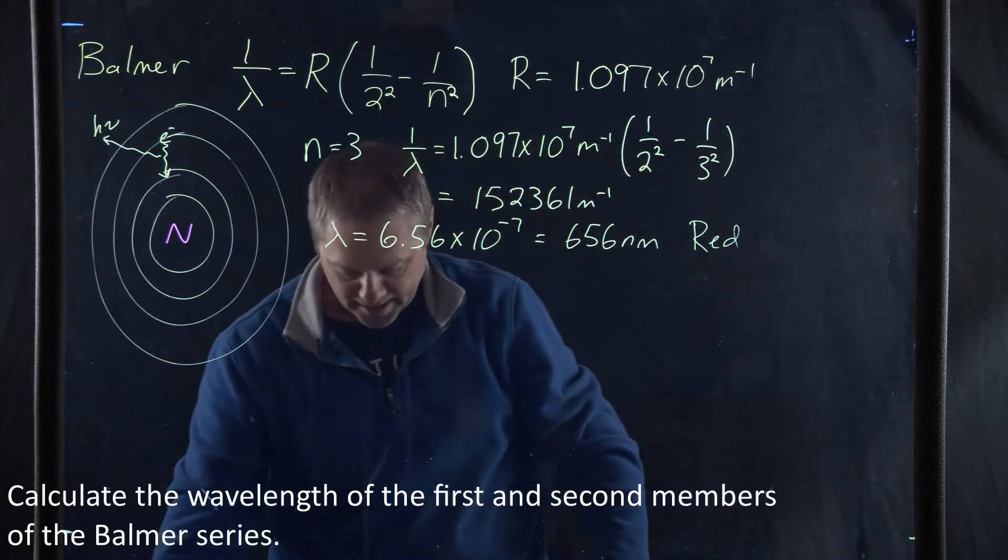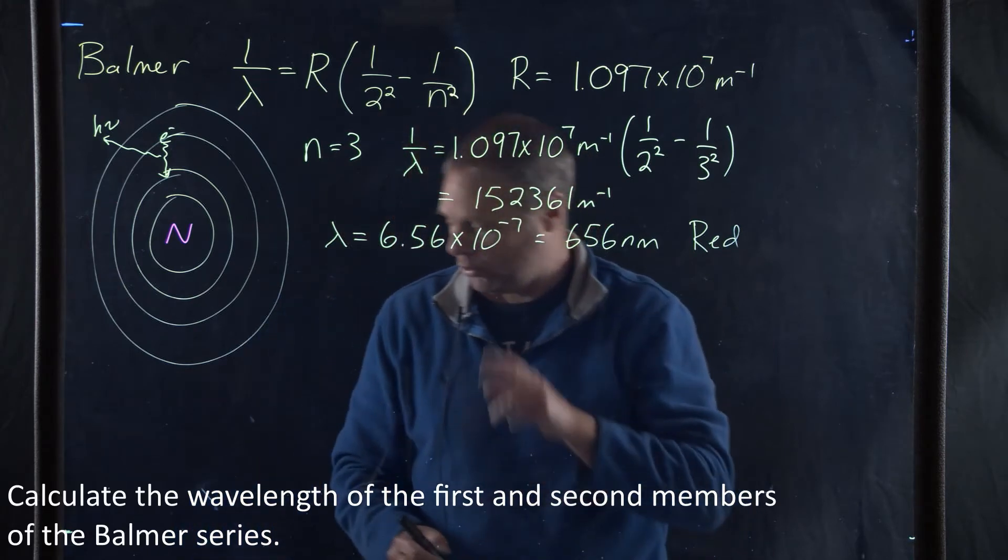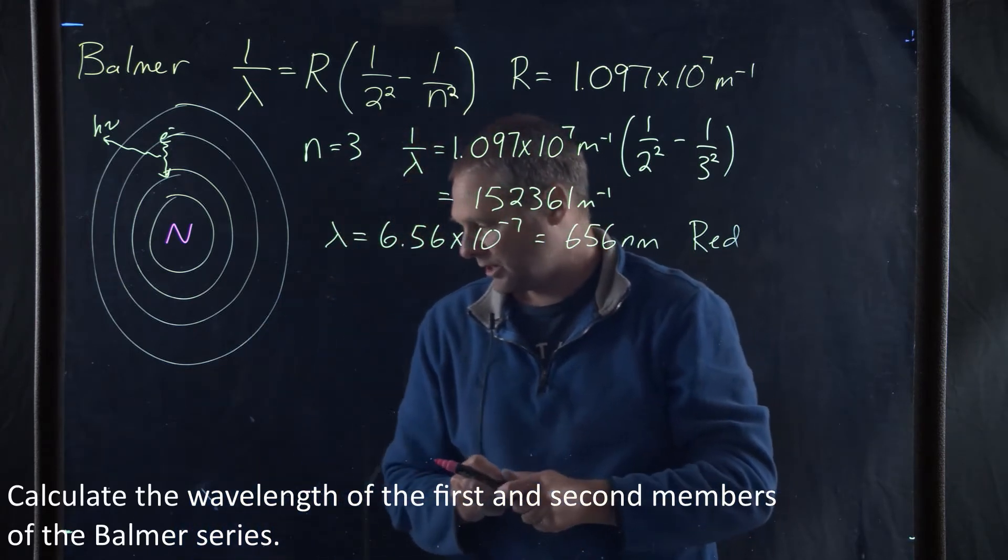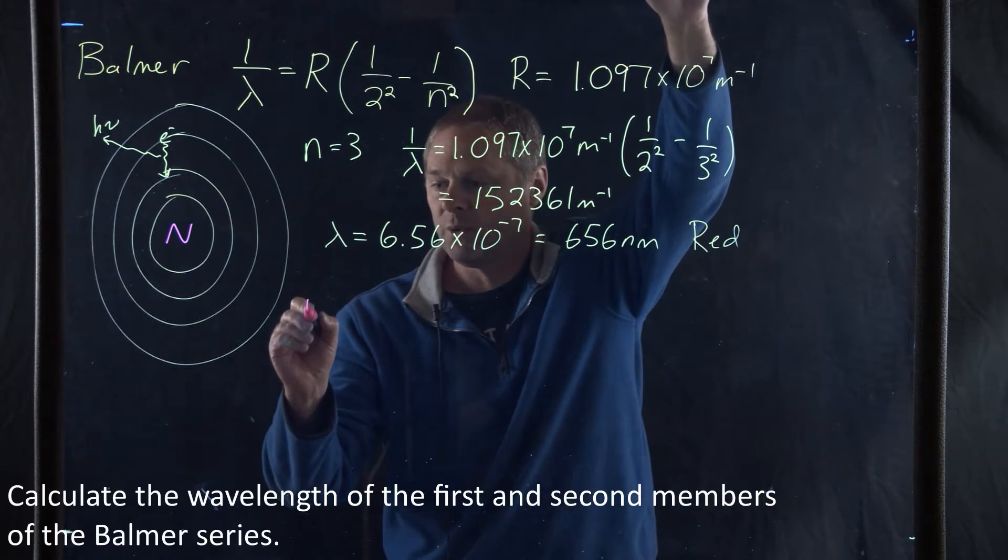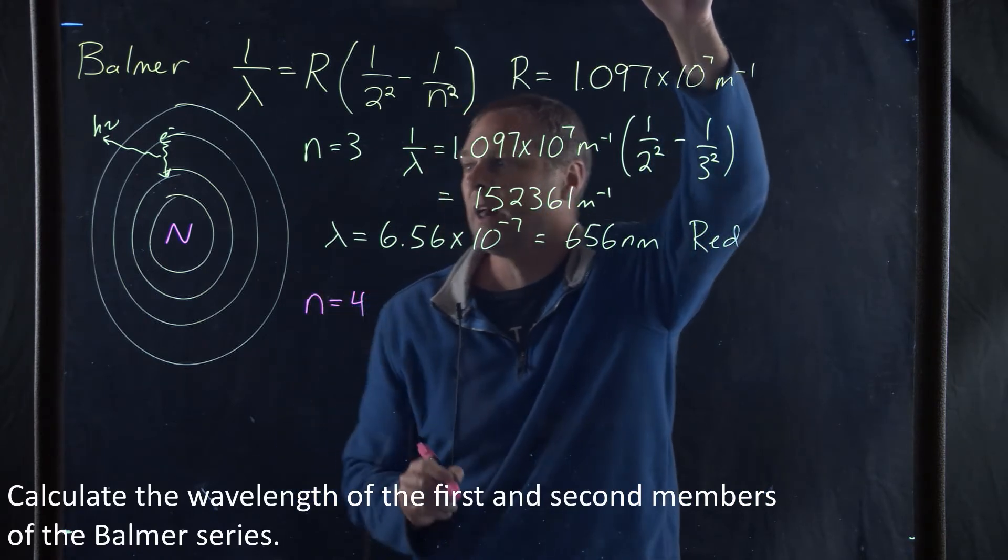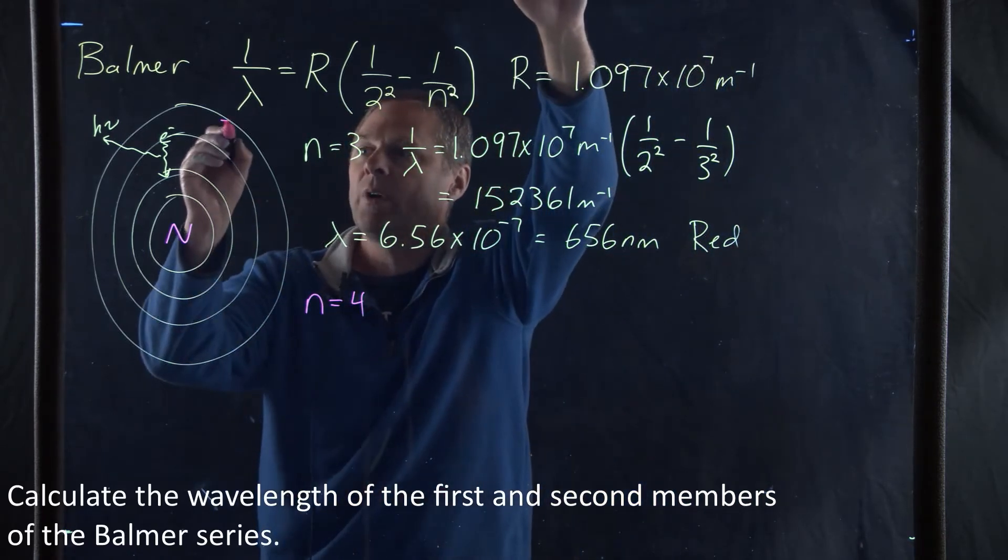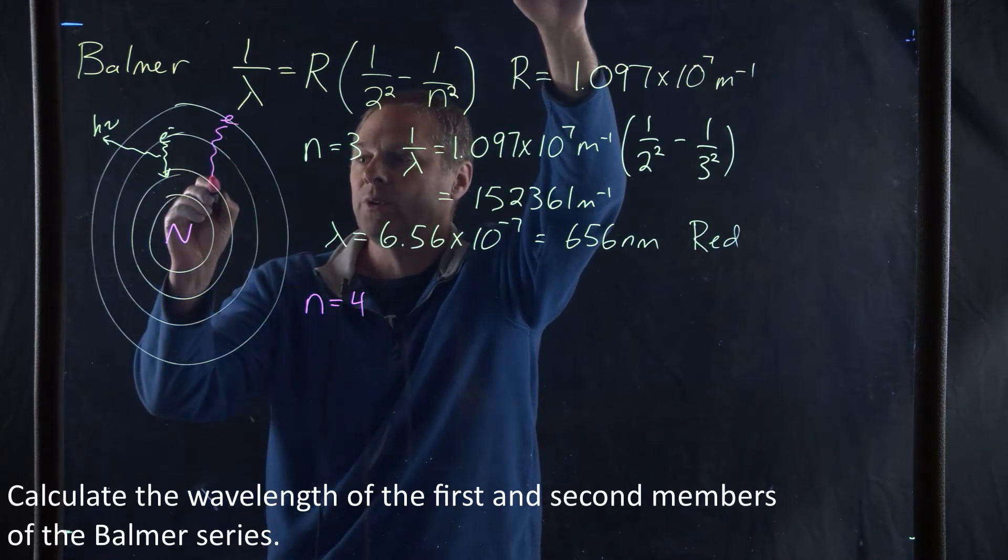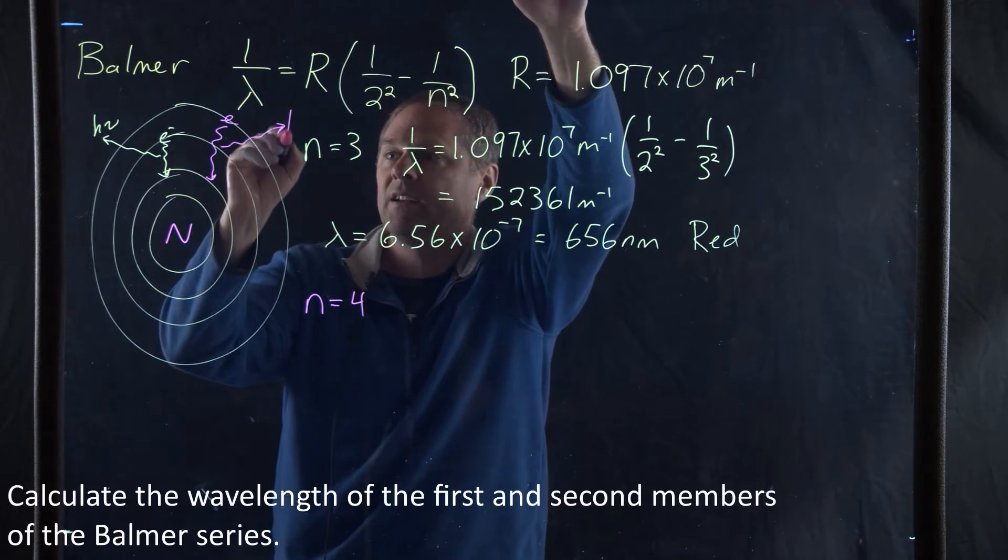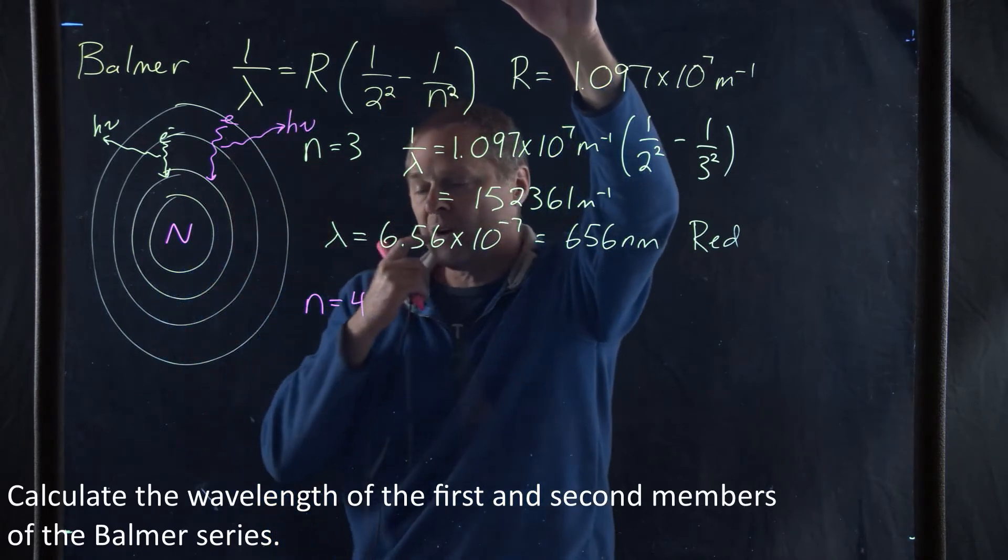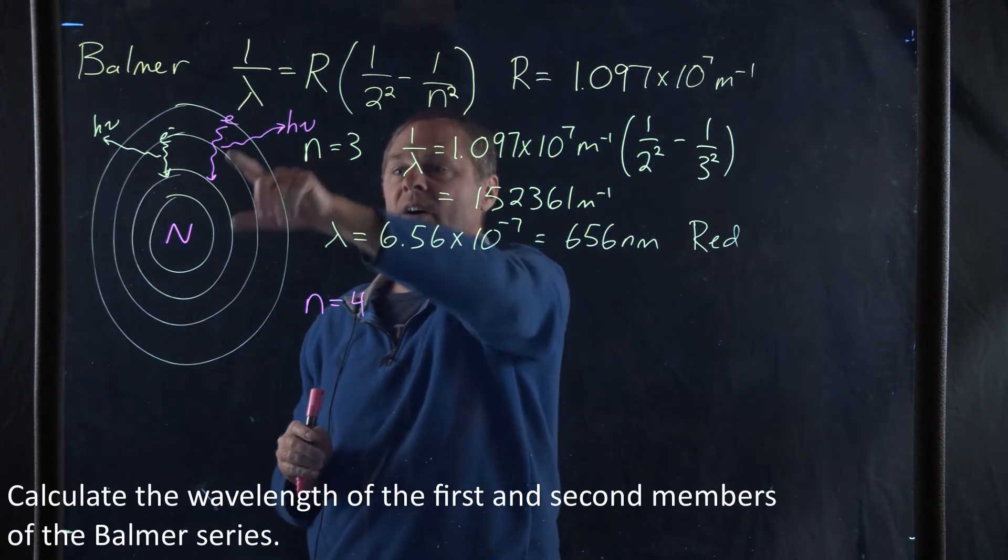Now the next one asks us to do the second series, or the second member. The second member is going to be n equals 4. In that case, what happens is we have an electron in the fourth orbital, and it's going to relax down back to the second orbital, and light is going to be given off from that. What is the wavelength of this light?